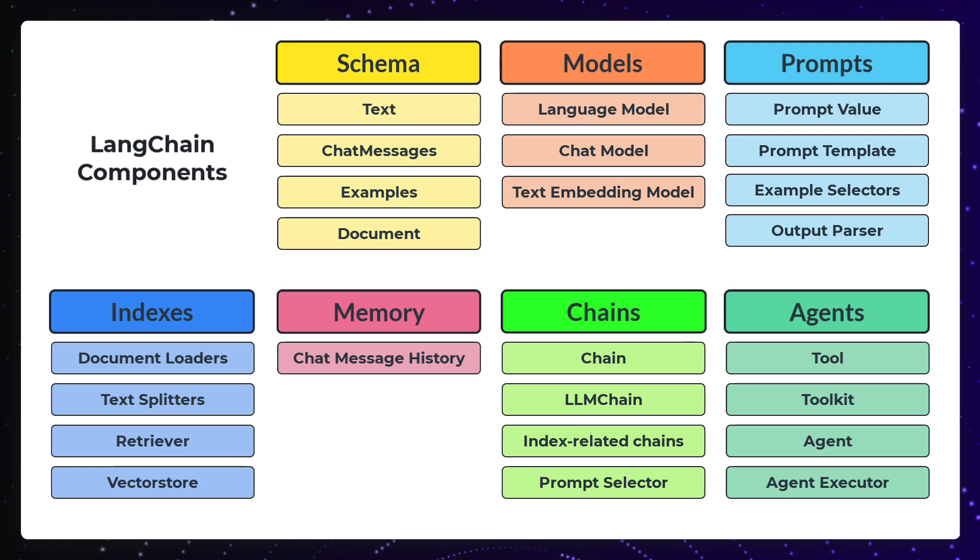And then we have toolkits. Toolkits are a group of tools to perform a specific task, like accessing Pandas or Jira or Power BI or just an SQL database. Our last building block is agent executor, which is actually the logic behind deciding the tools and the order of the calls.